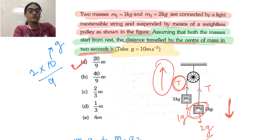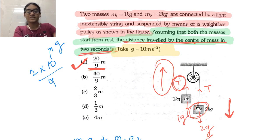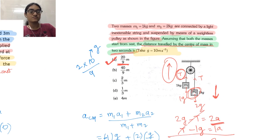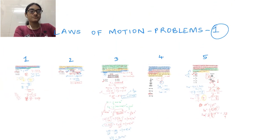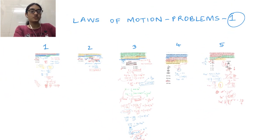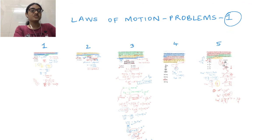Since both blocks start from rest, initial velocity U equals zero. Using S equals half ACM t squared: distance equals half into G/9 into 2 squared equals 2G/9. Taking G as 10: S equals 20/9 meters. This is the first option, A, with the correct answer 20/9 meters. With this we finish Laws of Motion Problem Set 1. Thank you.